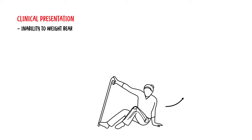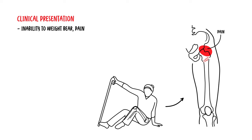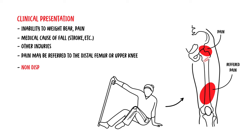The clinical presentation is typically inability to weight bear following a fall on the affected side. In the elderly, this presents with significant pain. It is important to consider other medical causes of the fall, such as a heart attack or stroke, and to look for other injuries such as knee, neck, or shoulder problems. Pain may be referred to the distal femur or upper knee, and non-displaced fractures can initially appear normal.